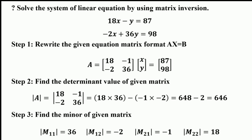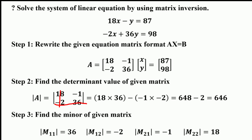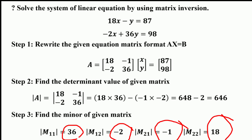After finding the determinant, we want to find the minors of the given matrix. For finding each minor, we remove the row and column corresponding to that element. The first minor is 36, the second minor is −2, the third minor is −1, and the fourth minor is 18. So the minors are 36, −2, −1, and 18.